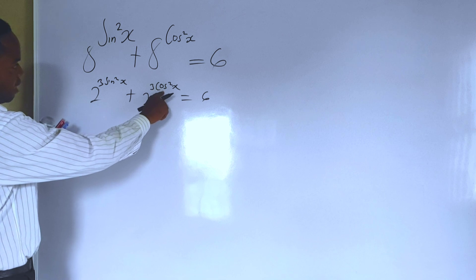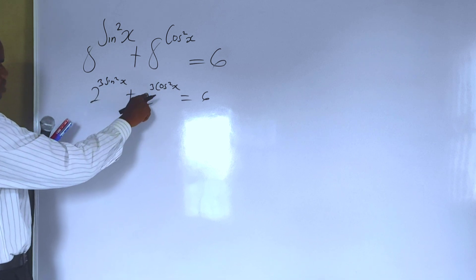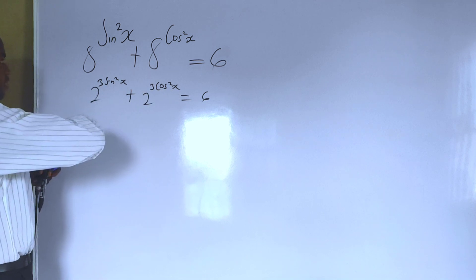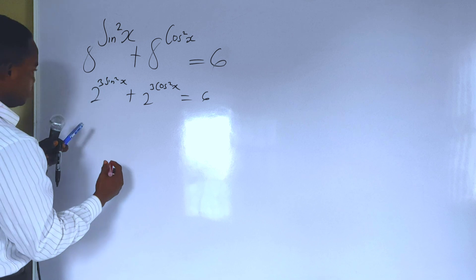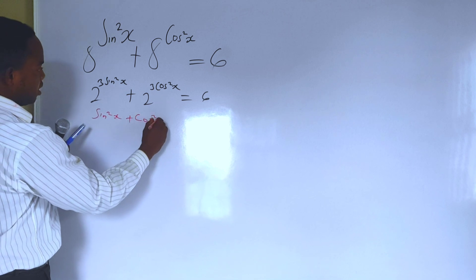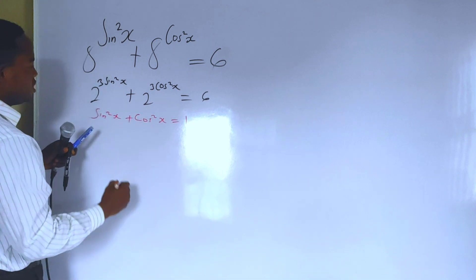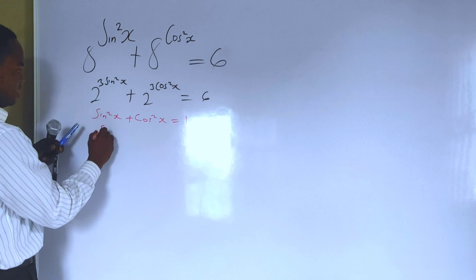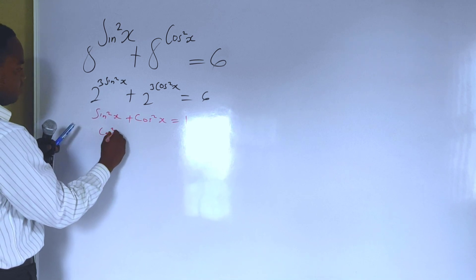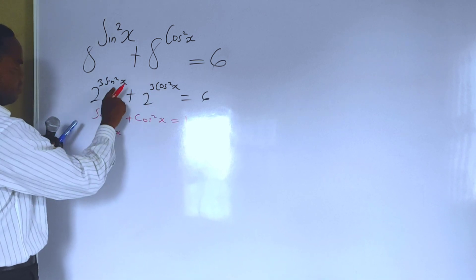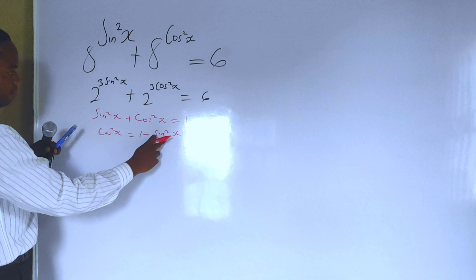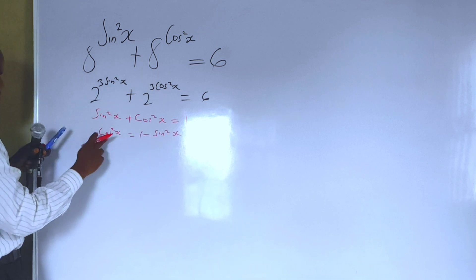This is an odd one out. I want both to be similar — either I change both to cosine of x or both to sine of x. Recall the fundamental trigonometric identity: sin squared of x plus cos squared of x equals 1. From here, cos squared of x equals 1 minus sin squared of x. So I am putting this in place of cos squared of x here.